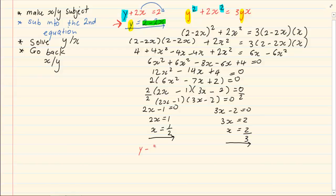So, we have y is equal to 2 minus 2 and x is a half. Which will give us y is equal to 2 minus 1 which is equal to 1. And in this case, we have y is equal to 2 minus 2 into 2 over 3. y is equal to 2 minus 4 over 3. So, y is equal to 2 over 3.